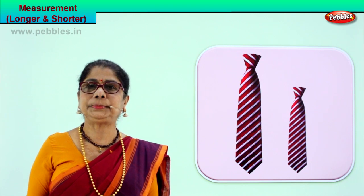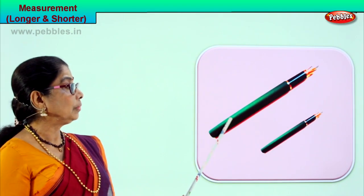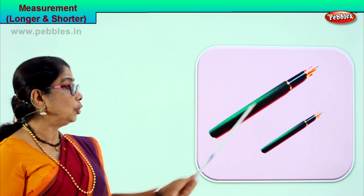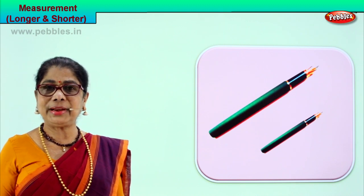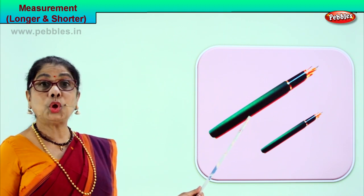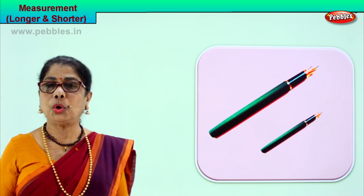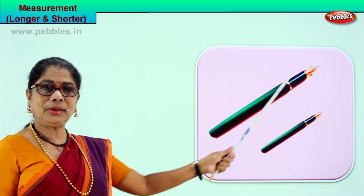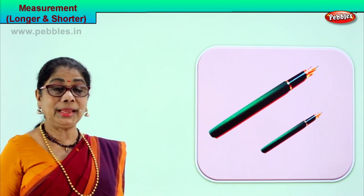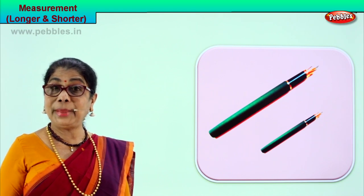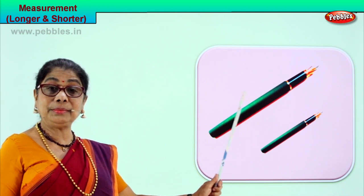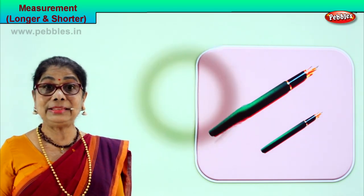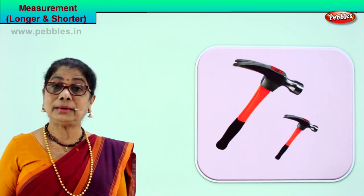Shall we look at another picture? You have pens — two pens here. One is a short pen, another one is a long pen: pens of two different lengths. We say this pen is longer than this pen, or this pen is shorter than this pen. Longer, shorter — we are learning to compare measurements. The same items of different size.